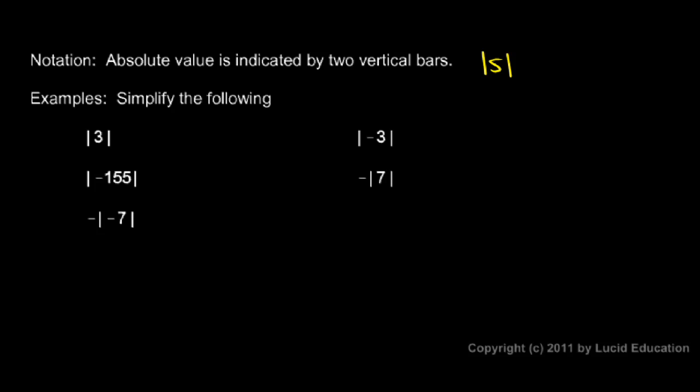So if we wanted to write the absolute value of 5, we would put the number 5 in between these two vertical bars like this. And this would be read the absolute value of 5.